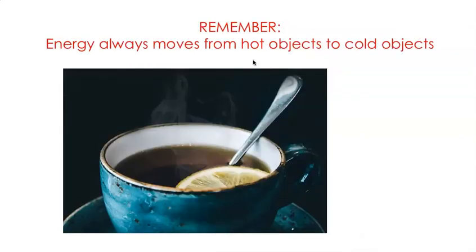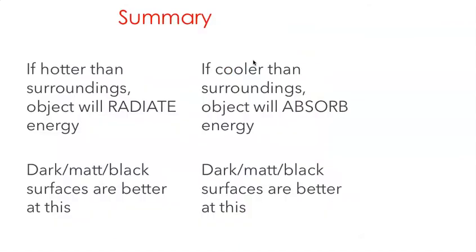So how do we help students understand that objects with a dark, matte or black surface are better at both emitting and absorbing energy? We must remind students that energy always moves from hot objects to colder objects. If an object is hotter than its surroundings it will emit radiation — and if it has a dark surface it will do that better. If cooler than its surroundings it will absorb radiation — and if dark coloured it will do that better. Shiny surfaces just reflect the radiation.